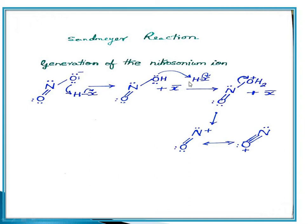As a result, an N=O⁺ species (nitrosonium ion) is formed. This is resonance-stabilized: the oxygen lone pair transfers to nitrogen (positive charge), so the positive charge shifts from nitrogen to oxygen. This resonance-stabilized nitrosonium ion then reacts further with aniline in the diazotization step, where NaNO2 + HCl form a diazonium salt.